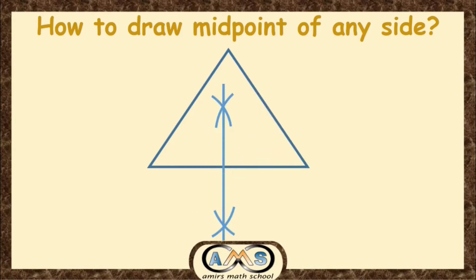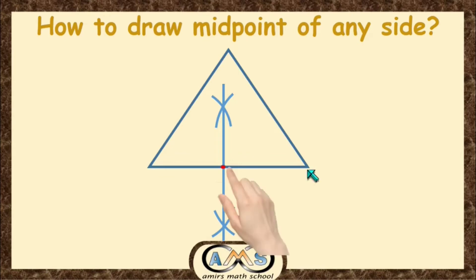Finally, join the two points of intersection. This line intersects the side at one point — this point is our midpoint of this side. In this way, we can draw the midpoint of any side.